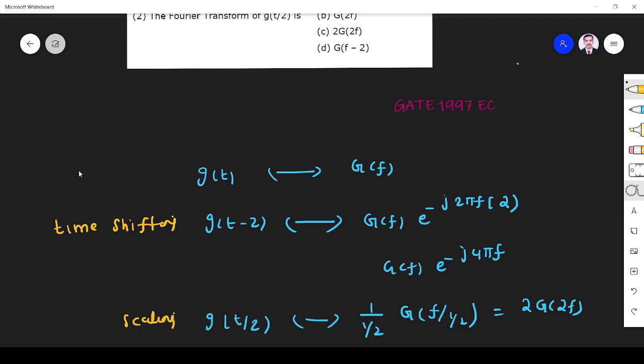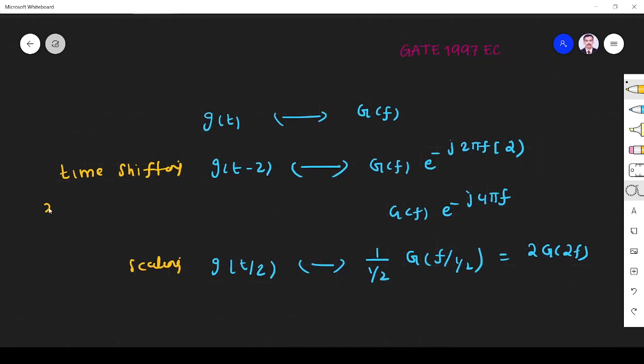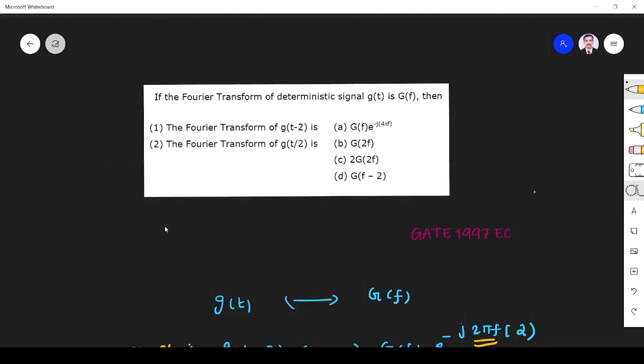So for easy understanding, I'll write the property here. x(t-a) has Fourier transform X(ω)e to the power minus jaωt. So X(t) has Fourier transform X(ω), then x(t-a) will have Fourier transform where ω equals 2πf. That's what I have written, 2πf, and a is 2. So that's why the answer is G(f) times e to the power minus j4πf. So this is one.